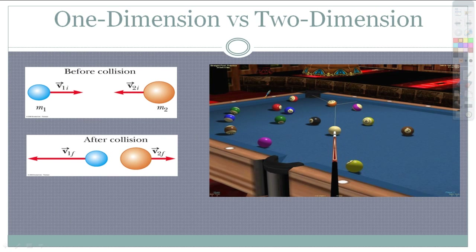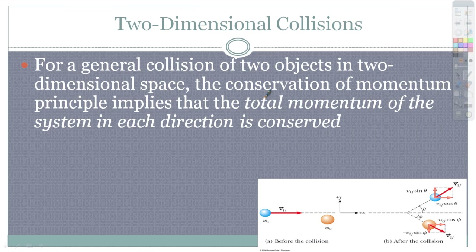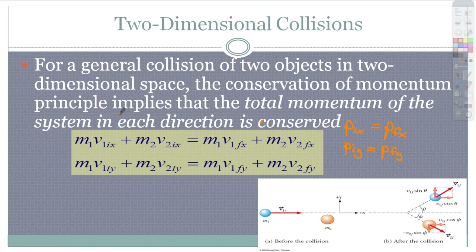Now we're going to move on to two-dimensional collisions. These get a little trickier because there are angles involved. For a general collision of two objects in two-dimensional space, the conservation of momentum principle implies that the total momentum of the system in each direction is conserved. So the momentum initial in x equals momentum final in x, and momentum initial in y equals momentum final in y. Your subscripts — like velocity of the first one initially in the x-direction — can get a little cumbersome, but they help you know which direction you're talking about.